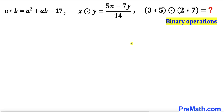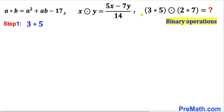Let's go ahead and get started with the solution. Here's our game plan: in the first step we are going to take care of 3★5, in the second step we are going to take care of 2★7, and finally in the third step we are going to combine them.